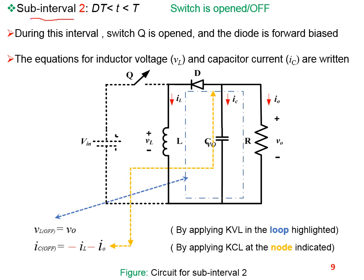On this slide the equivalent circuit of the buck-boost converter is given for sub-interval 2. During this sub-interval the switch Q is open, represented by a dotted line. The diode is forward biased due to the inductor L, carrying the inductor current to the load.